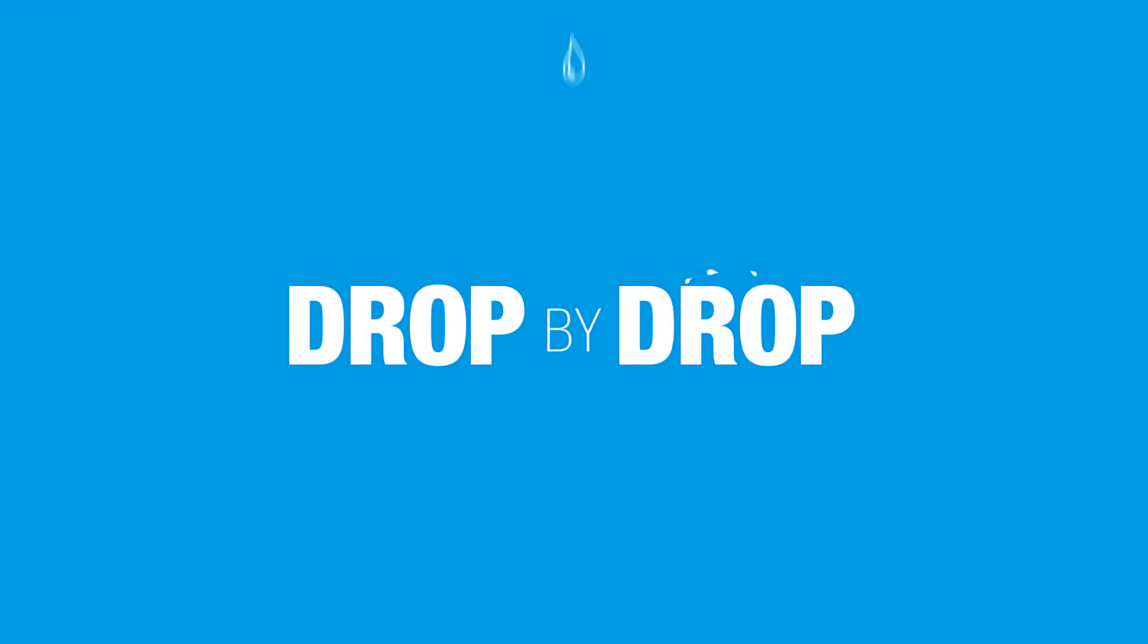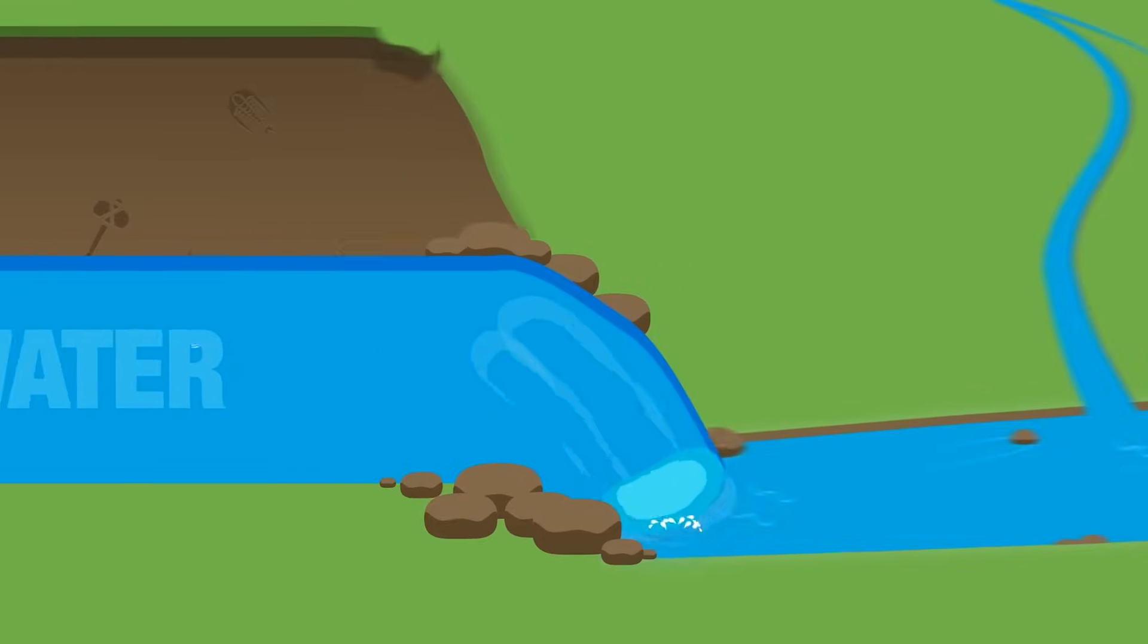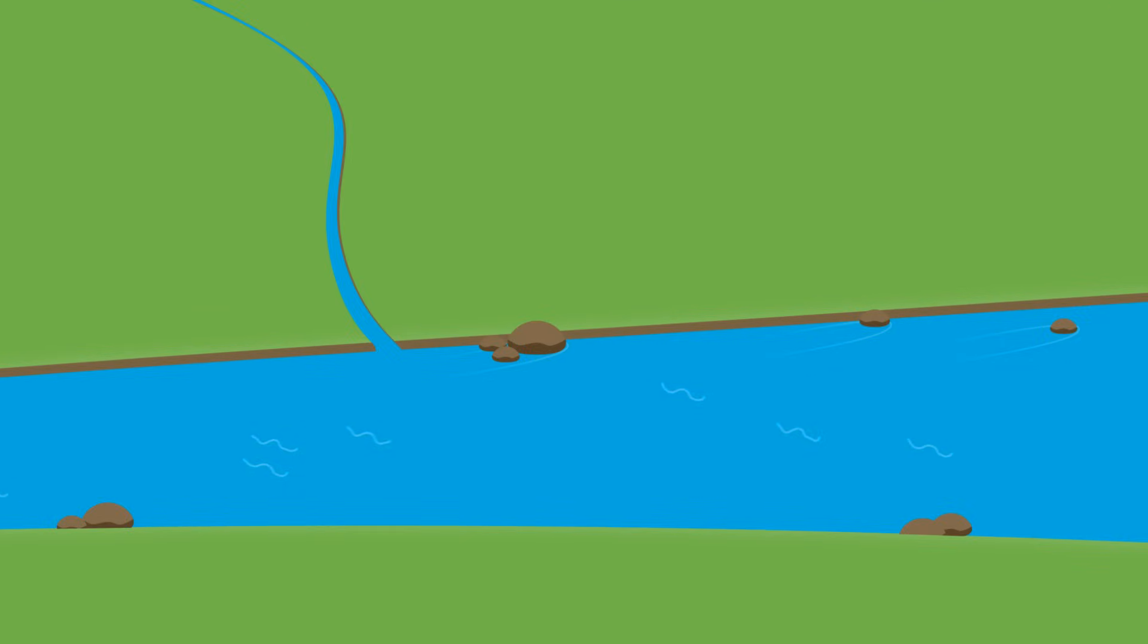Drop by drop, water is channeled into soil, groundwater, creeks and streams, making its way to larger rivers and eventually the ocean.